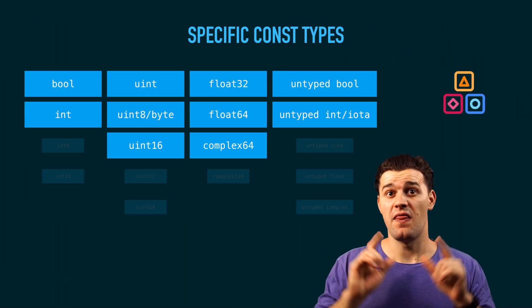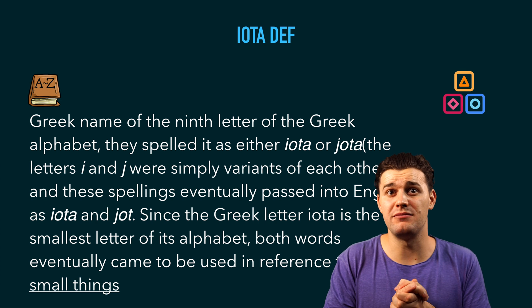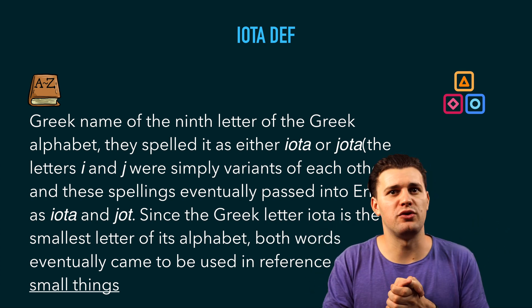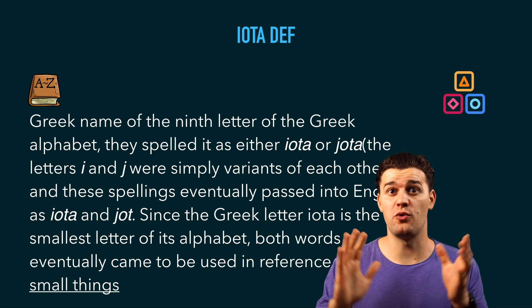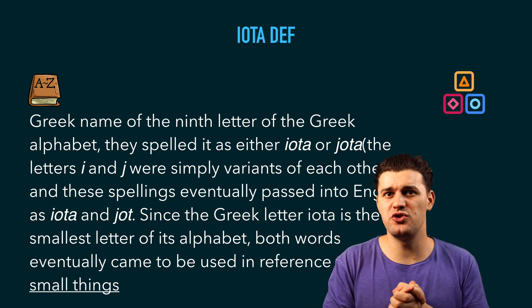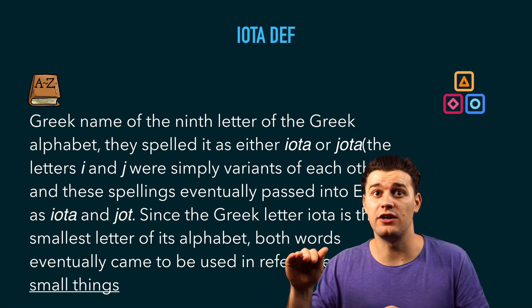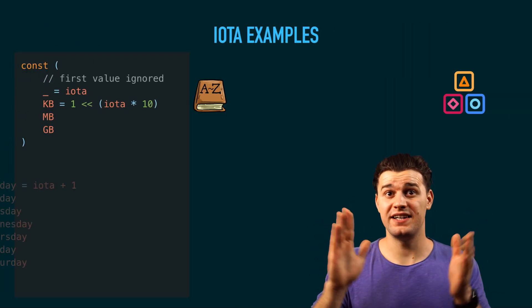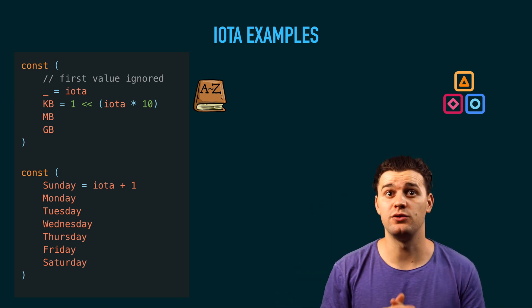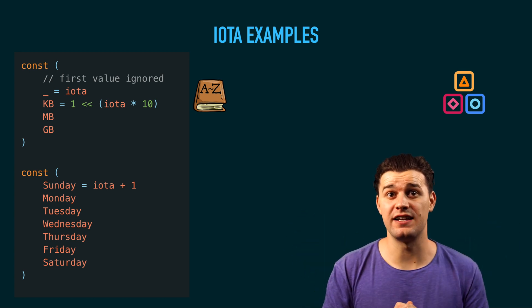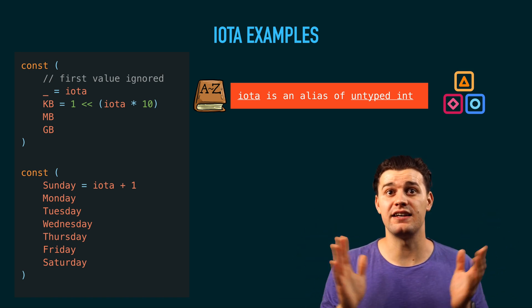When we talk about specific const types, these are the types a const can take. There's also another special constant in Go called IOTA. IOTA from Greek means the smallest letter in their alphabet — basically the smallest unit. Imagine you want byte multiples or the days of the week as constants. You'd normally declare each one individually, but you can use IOTA to make your life simpler. You assign IOTA to the first constant and the rest are automatically filled with values. IOTA is ultimately nothing but an integer value — it's an alias of int.